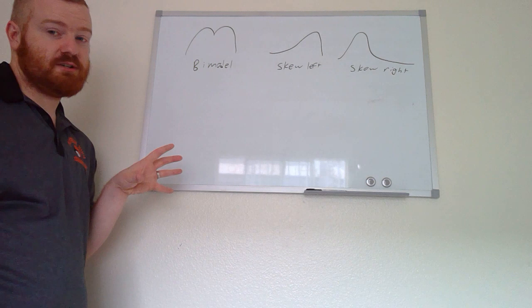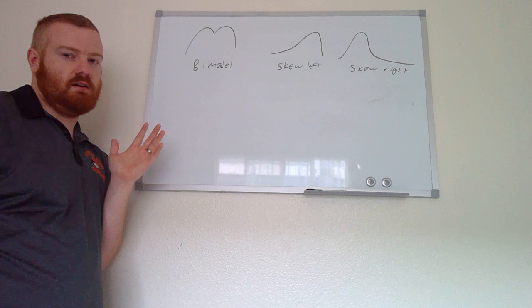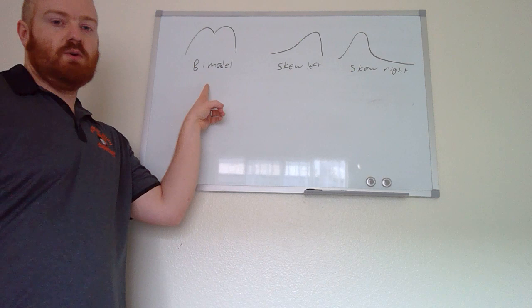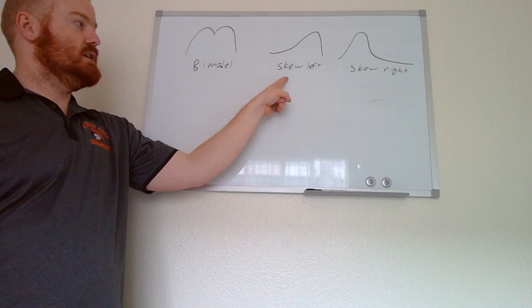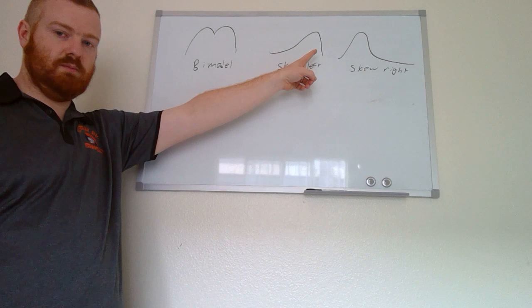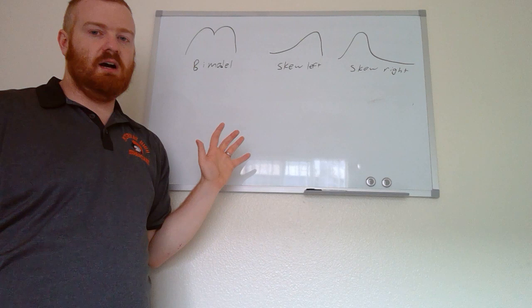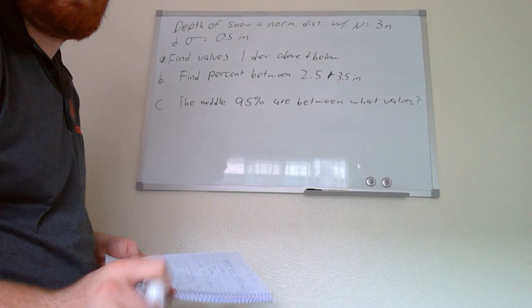It's not always the case that values follow a perfect normal distribution. A bimodal distribution has two different peaks. Skewed left means the majority of values are on the left side with the peak on the right. Skewed right means the peak is toward the left. These are distributions you might encounter in homework — you don't need to worry too much about them.